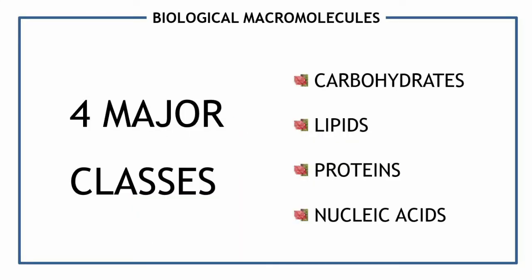We have four major classes of biological macromolecules: carbohydrates, lipids, proteins, and nucleic acids. We will go through each one, starting with carbohydrates.